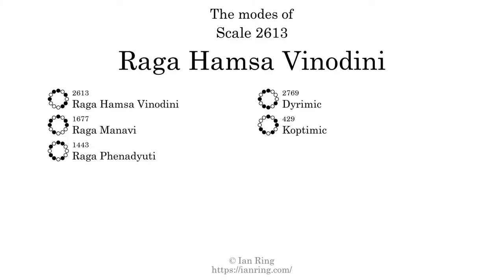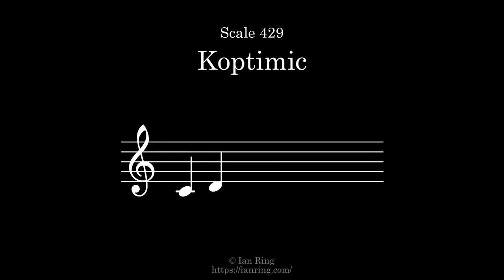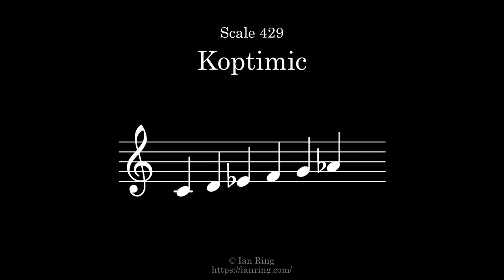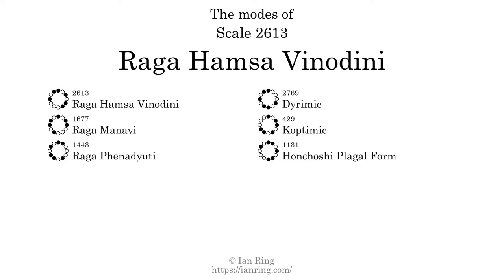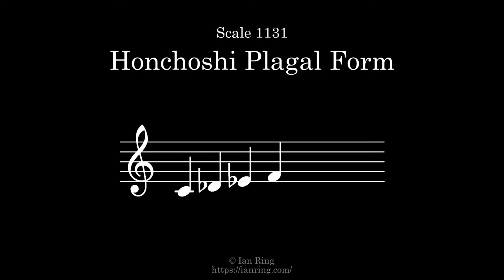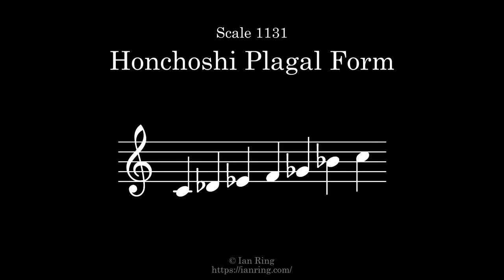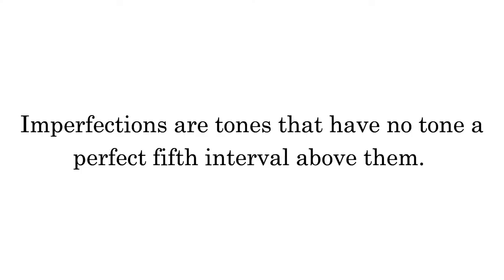The fifth mode is scale 429, also known as Coptimic. The sixth mode is scale 1131, also known as Hanchoshi Plagal Form.